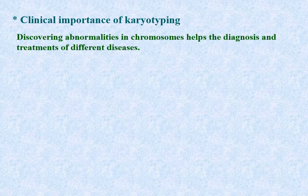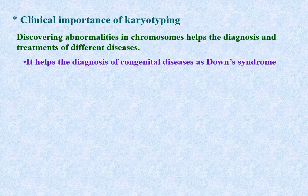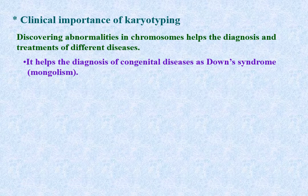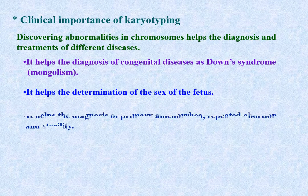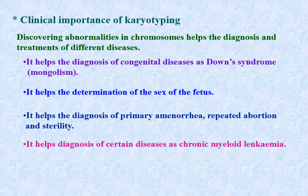Clinical importance of karyotyping: discovering abnormalities in chromosomes helps the diagnosis and treatment of different diseases. It helps in diagnosing congenital diseases such as Down syndrome (mongolism), determination of the sex of the fetus, diagnosis of primary amenorrhea, repeated abortion, and infertility. It also helps in diagnosis of chronic myeloid leukemia.